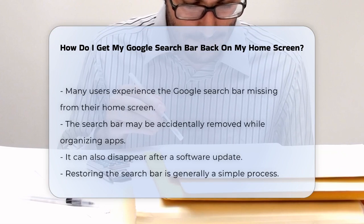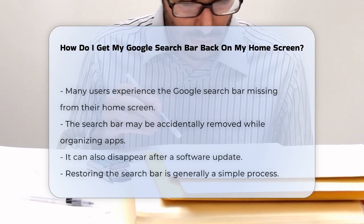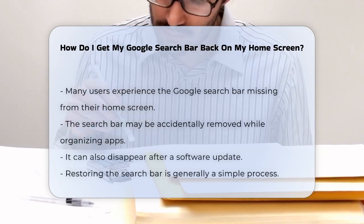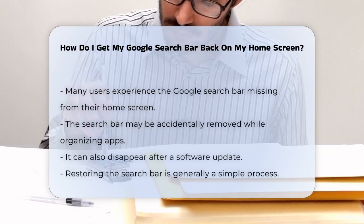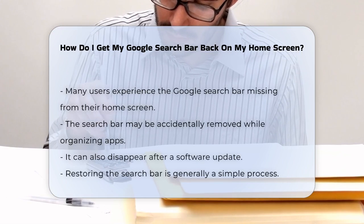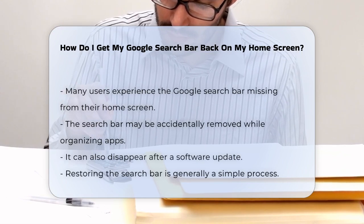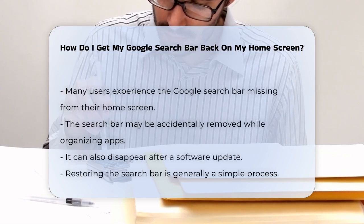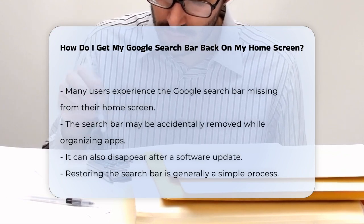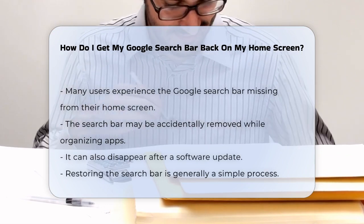Many users find their Google search bar missing from their home screen. This can happen due to various reasons. Sometimes it is accidentally removed while organizing apps. Other times it may disappear after a software update.